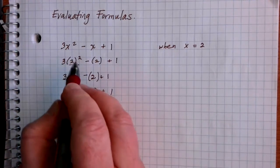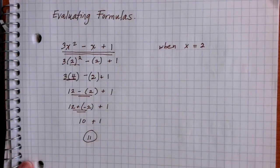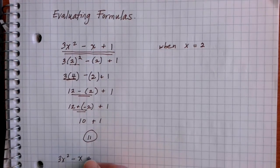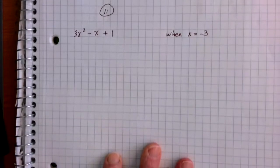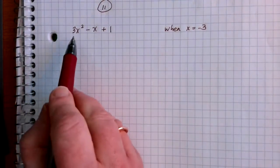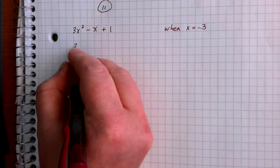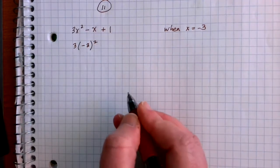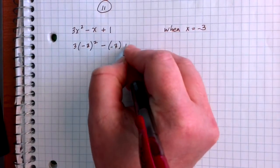Let's try the same example again using 3x squared minus x plus 1, but instead of x equals 2, let's do this when x equals negative 3. Same concept — anywhere we see an x, we replace it. So I'm going to have 3 times negative 3 to the second power, minus negative 3, plus 1.